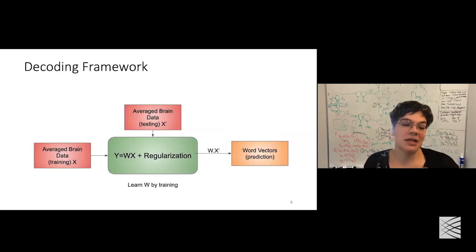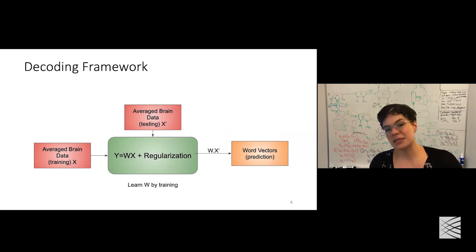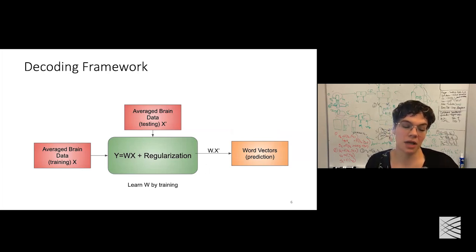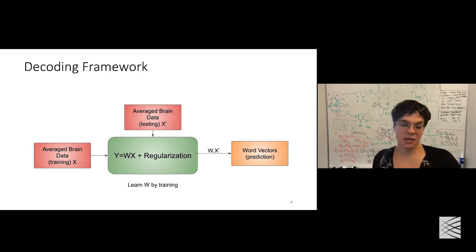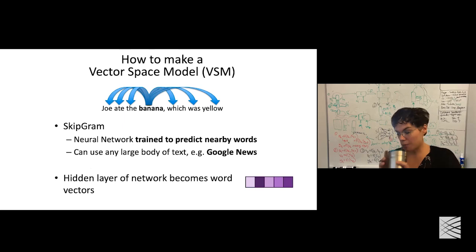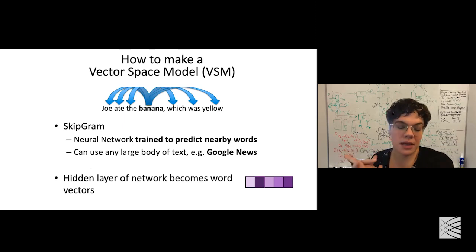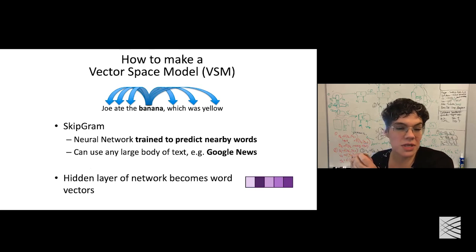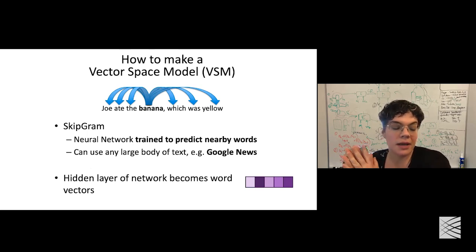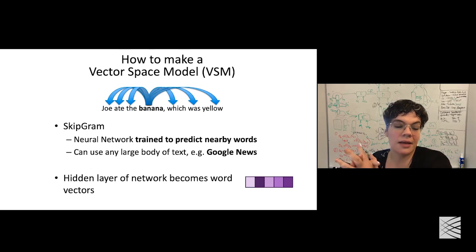In general, this uses the same framework Rohan described: brain imaging data collected while people are planning to say a word, split into training and testing, then a regularized regression model is created to predict the dimensions of the word vector — exactly the same process, just with a different data source. Skip-gram word2vec is used in this work, trained to predict nearby words as a function of a central word — for example, given 'banana,' predicting 'ate' or 'yellow' nearby. The model was trained on Google News, approximately one billion words.